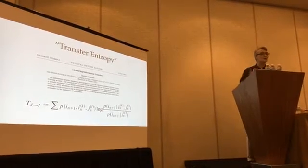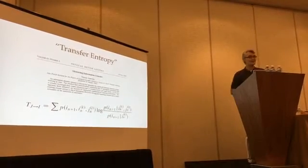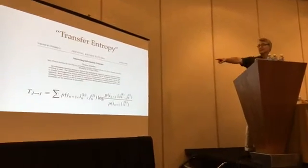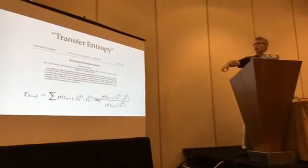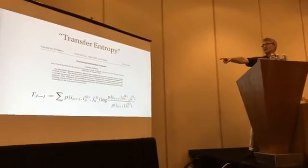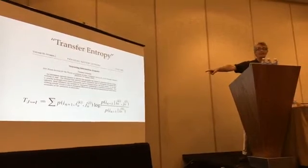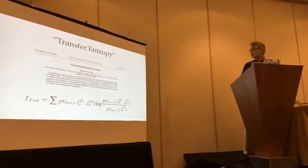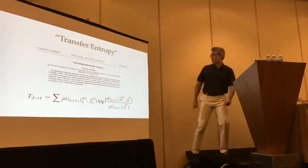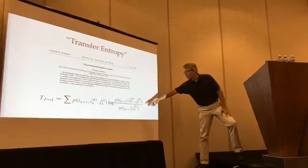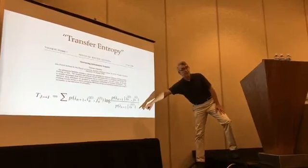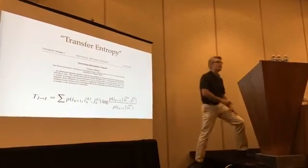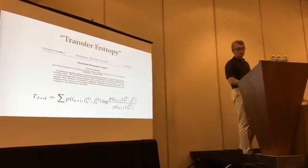I teach undergraduates in a large physics class, and when I put up equations I tend to recoil a little bit. And this early in the morning, maybe you do too. What this is, is an entropy — it's got the form of a P log P. The only difference is, as you'll see, between the numerator and the denominator, in the numerator you've got this extra term J, and I'll explain what that is.